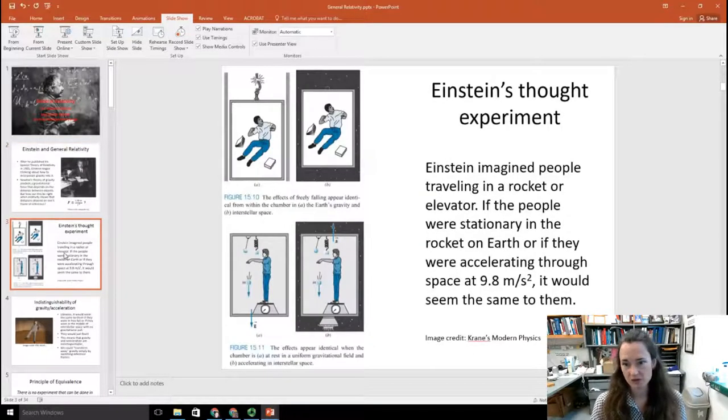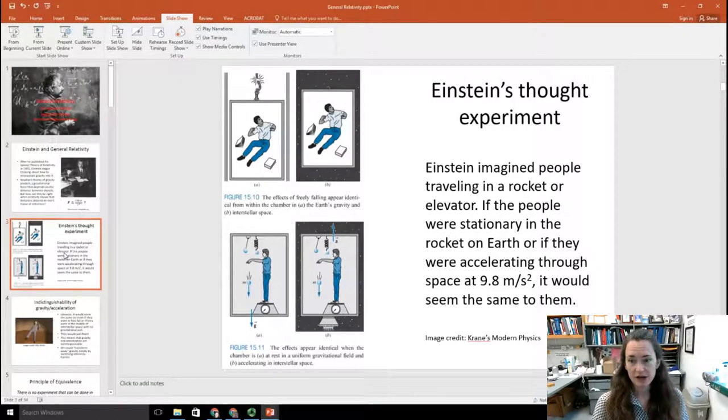So he came up with a thought experiment. Einstein imagined people traveling in a rocket or an elevator. Now, if the people were stationary in the rocket on Earth, or if they were accelerating through space at 9.8 meters per second squared, then it would seem the same to them.